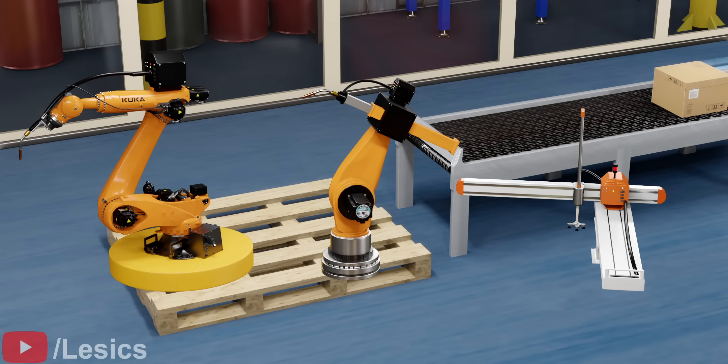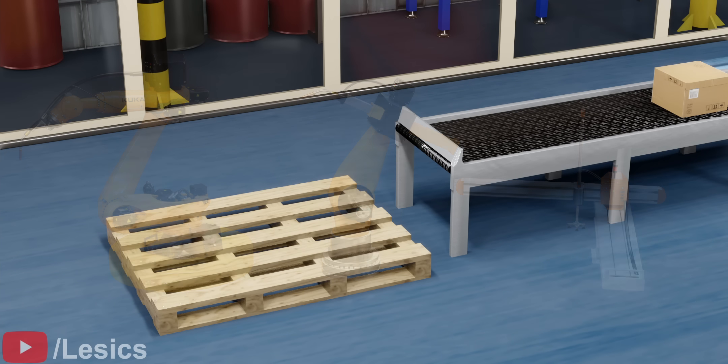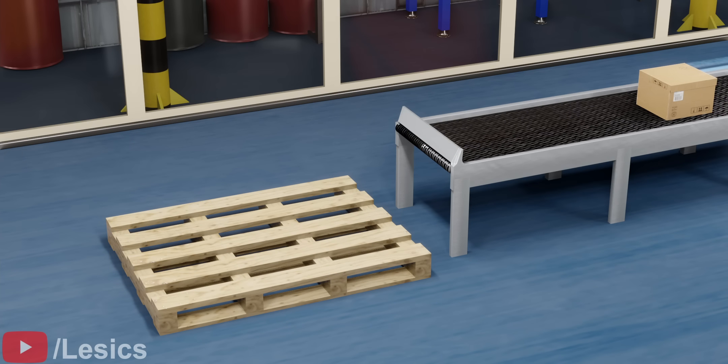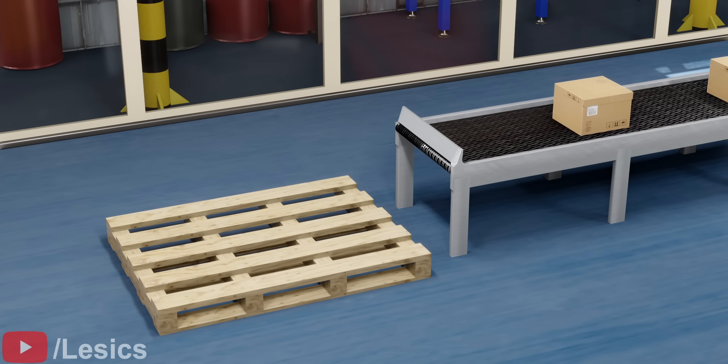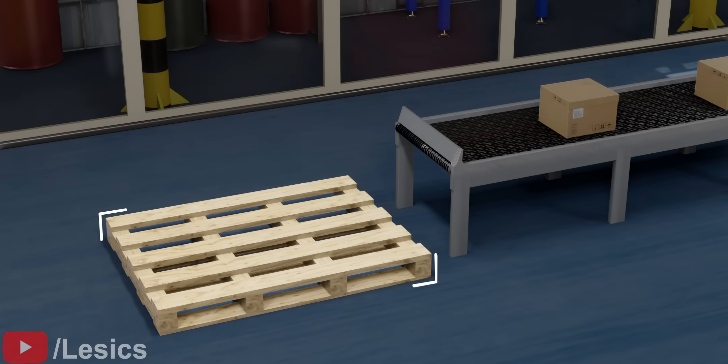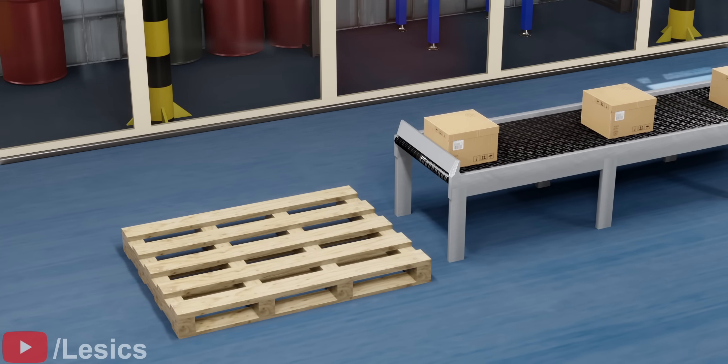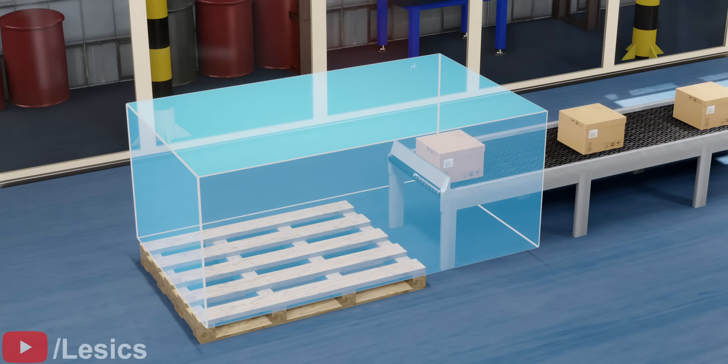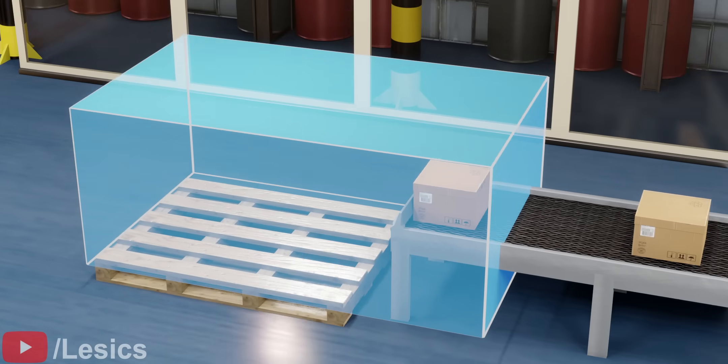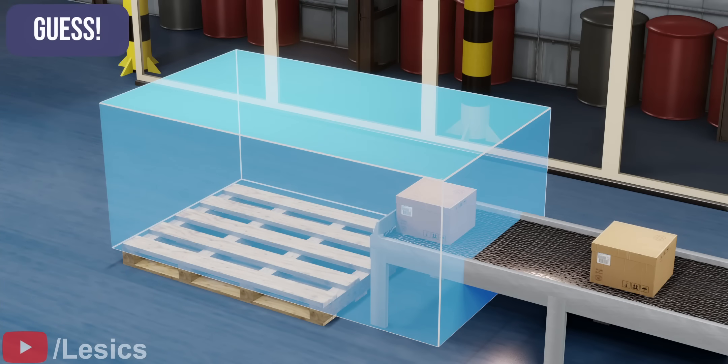Let's understand these concepts with the help of a robot design challenge. Suppose we have to collect some boxes from a conveyor belt and place them in this highlighted location. The work envelope required for the robot is obviously rectangular in shape. Can you guess what type of robot configuration is the best fit to complete this task?